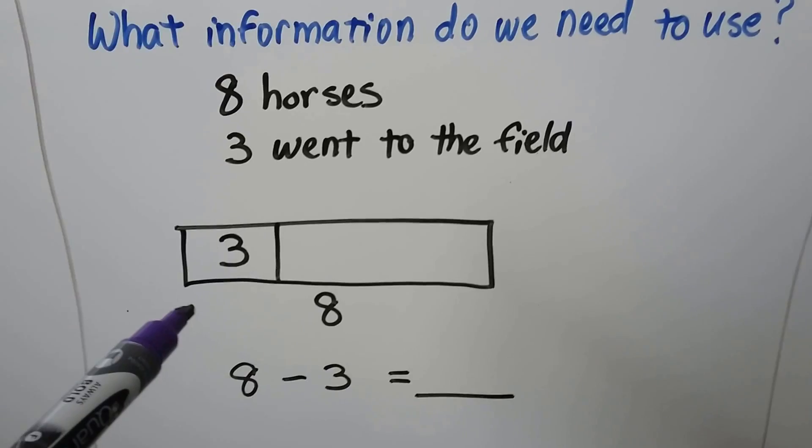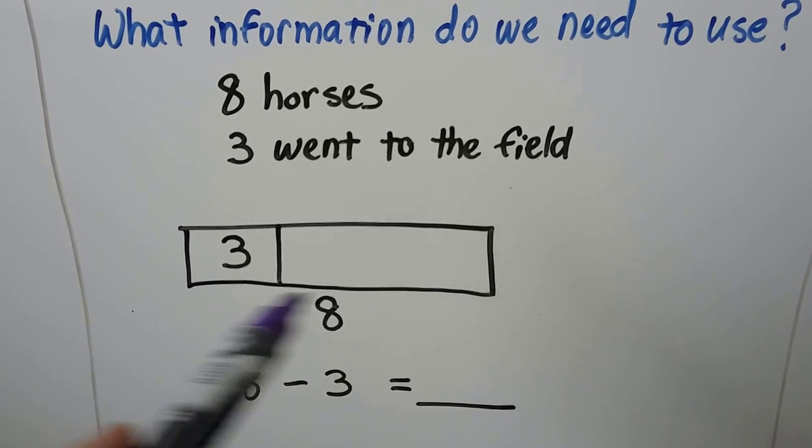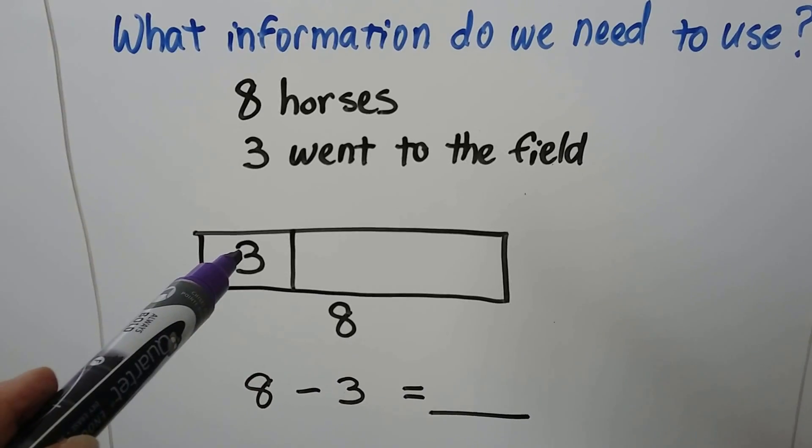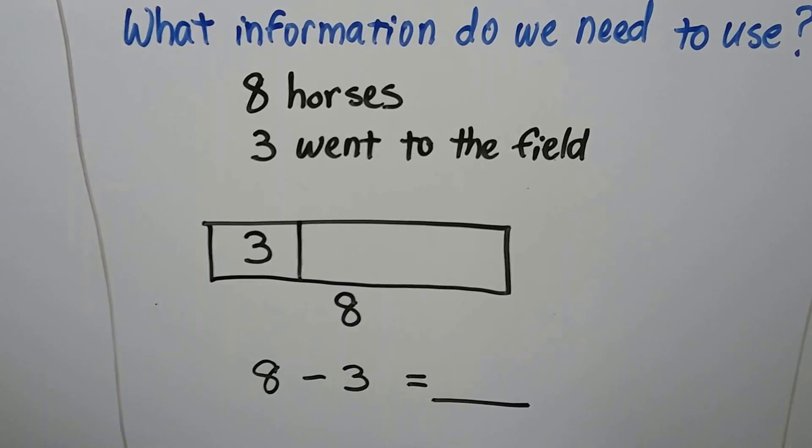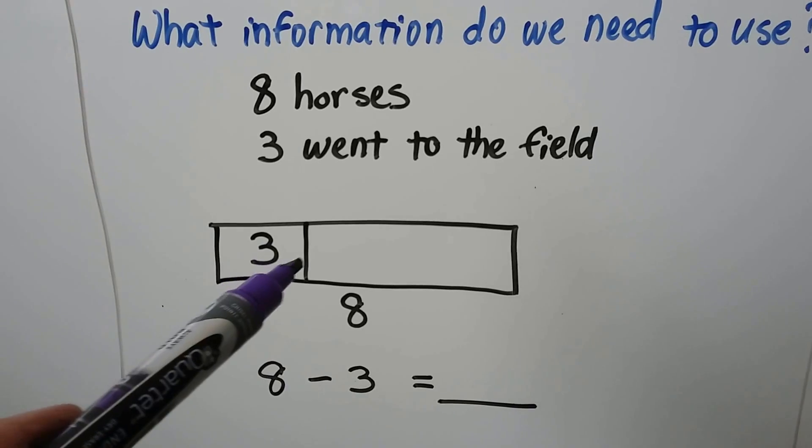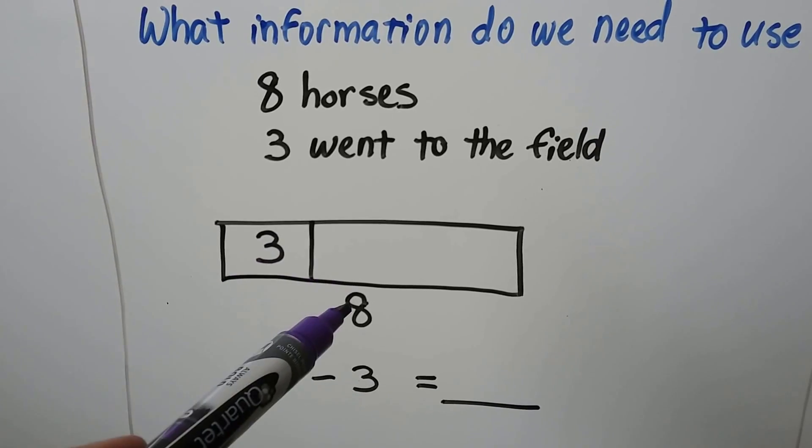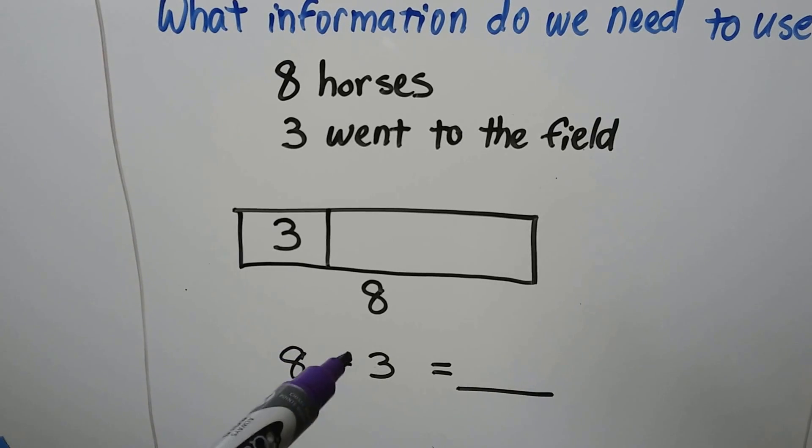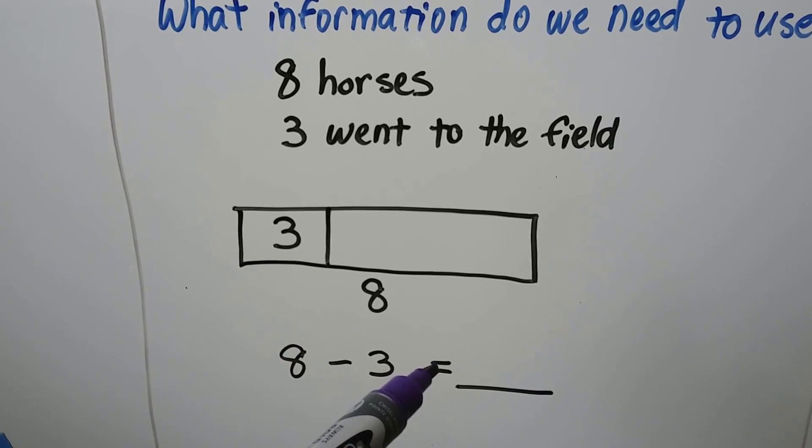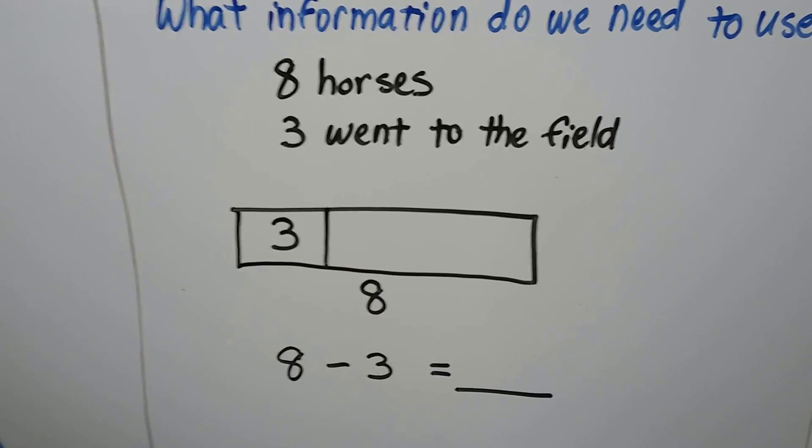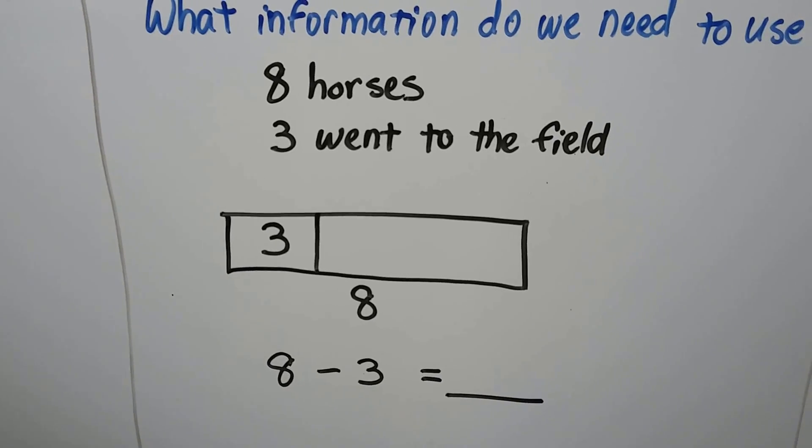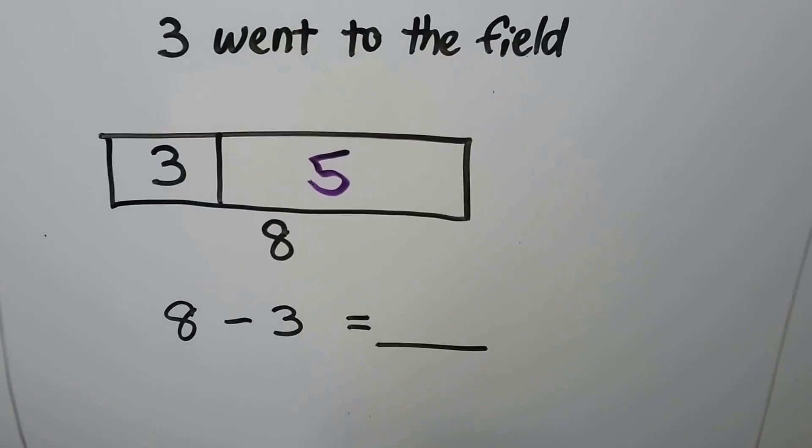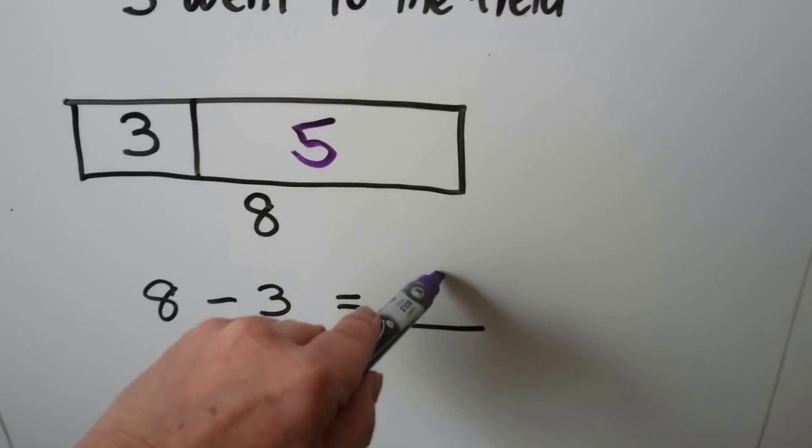We make our bar model. Eight is the number in all. Three went to the field. What number could go here? What number plus three would be eight? Eight minus three is equal to... Do you know what number can go there? Five. Eight minus three is equal to five.